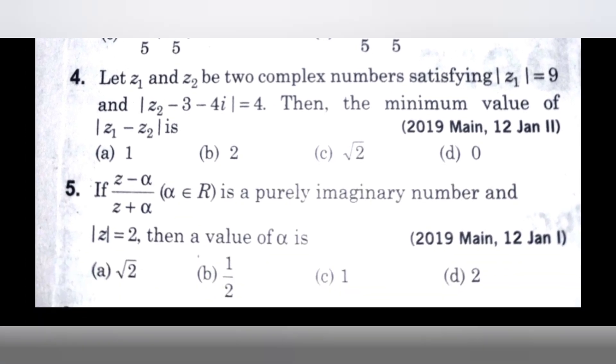Next question. If Z minus alpha by Z plus alpha, where alpha belongs to real numbers, is a purely imaginary number and mod Z equals 2, then a value of alpha is.